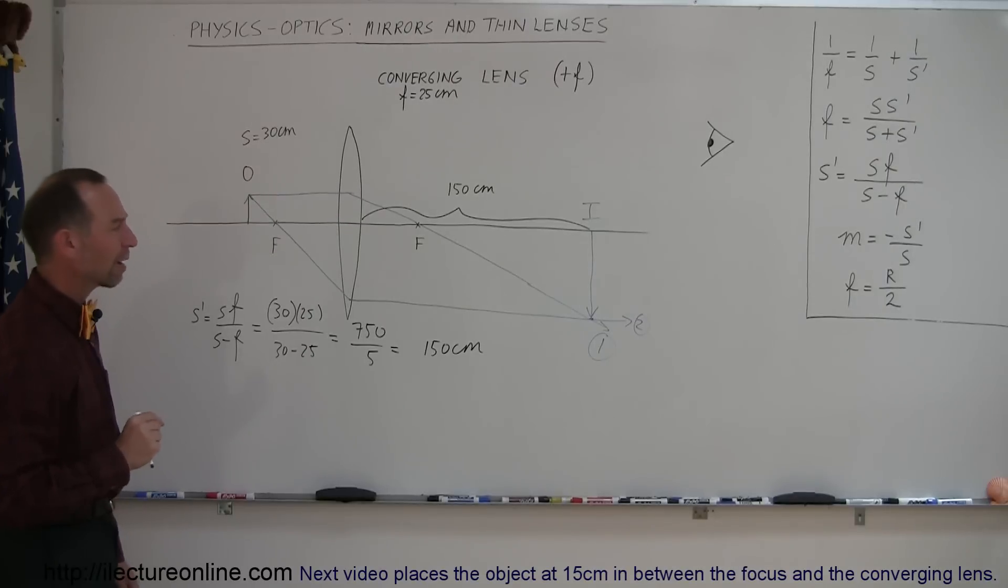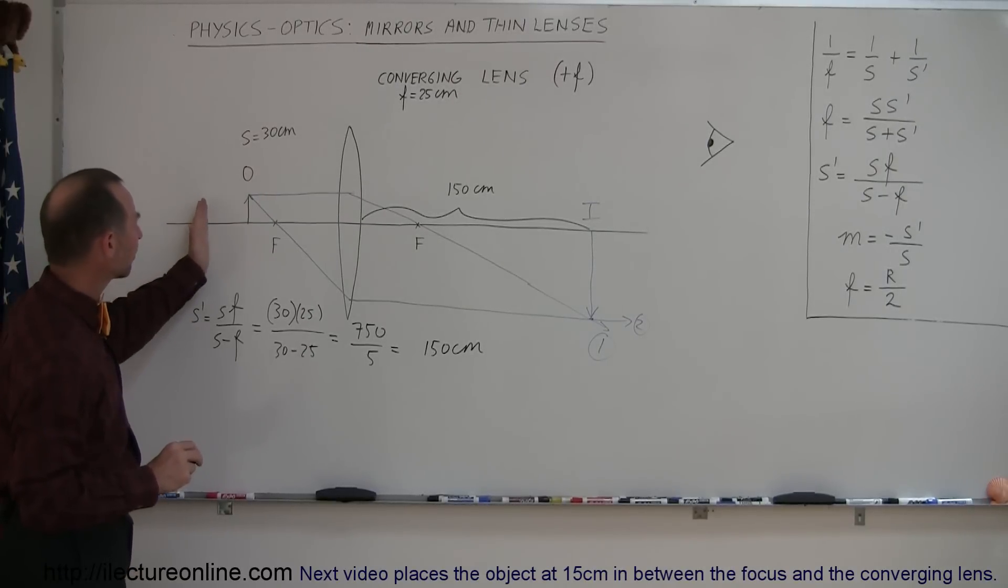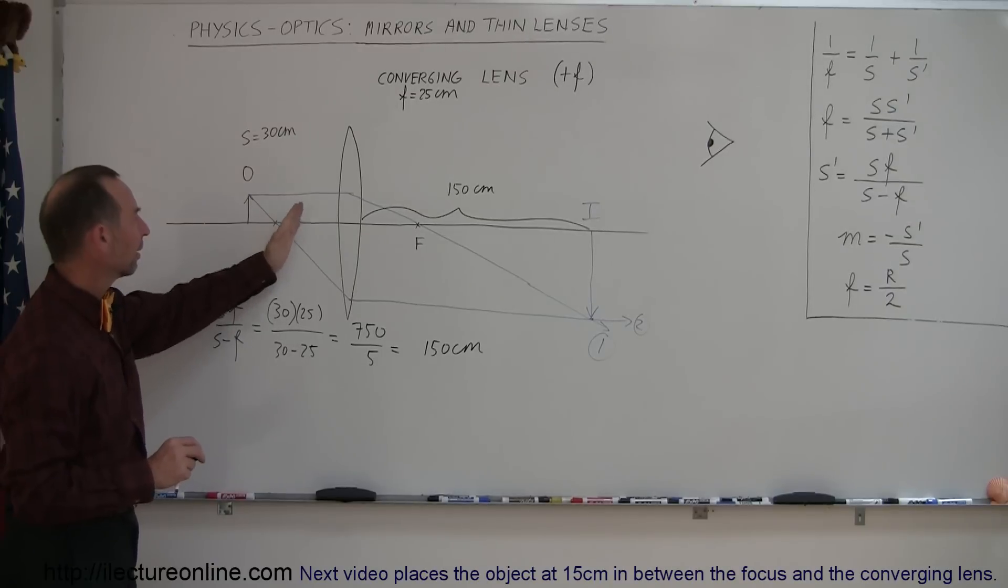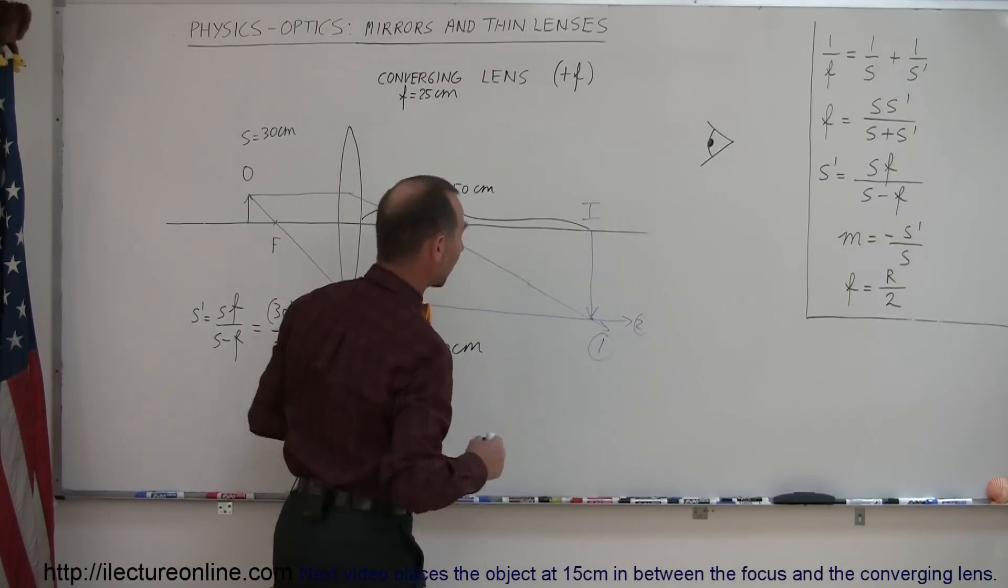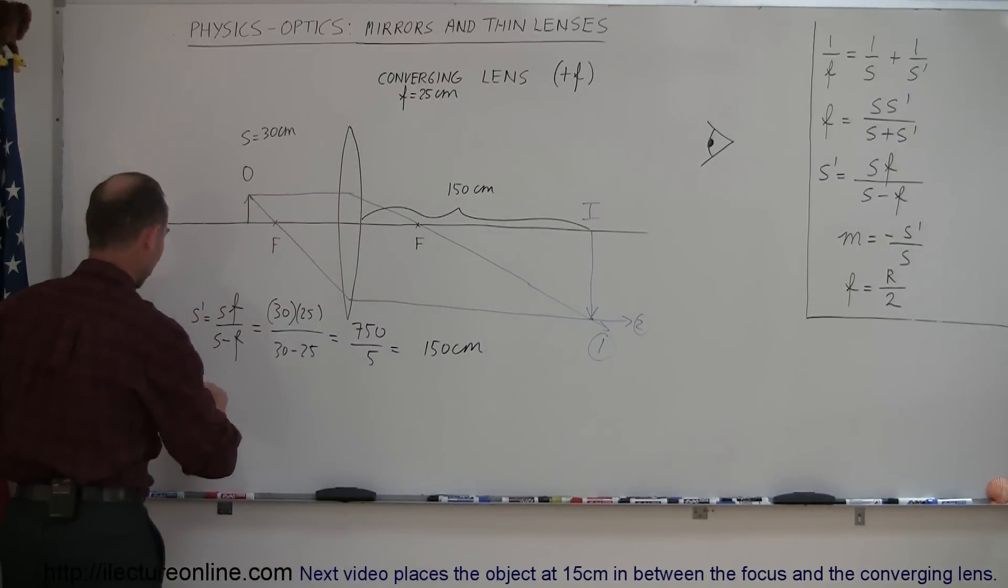Right here, it's quite far away from the lens. So notice that the closer the object comes to the focal point in front of the lens here, the farther away the image will form and the larger the image becomes. All right, let's find the magnification.